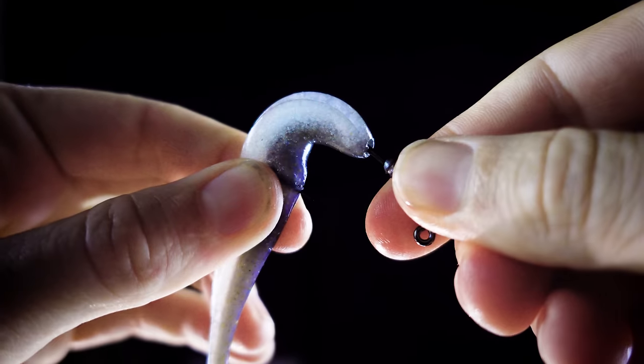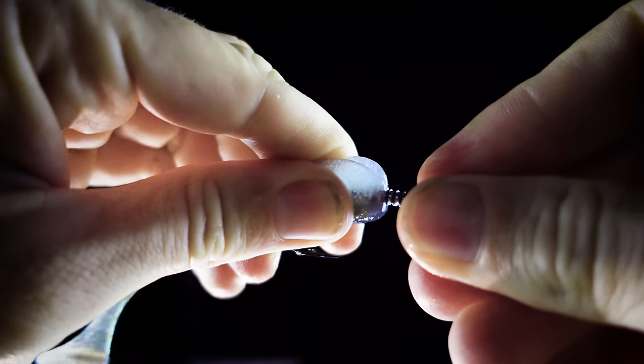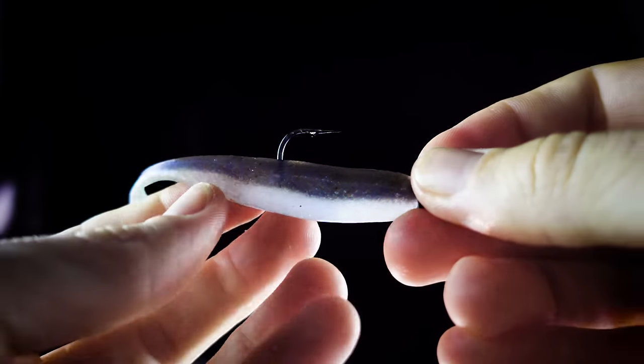Once you get to your little nick, feed her out through the nick, push the plastic on and voila, you have a perfectly rigged soft plastic.